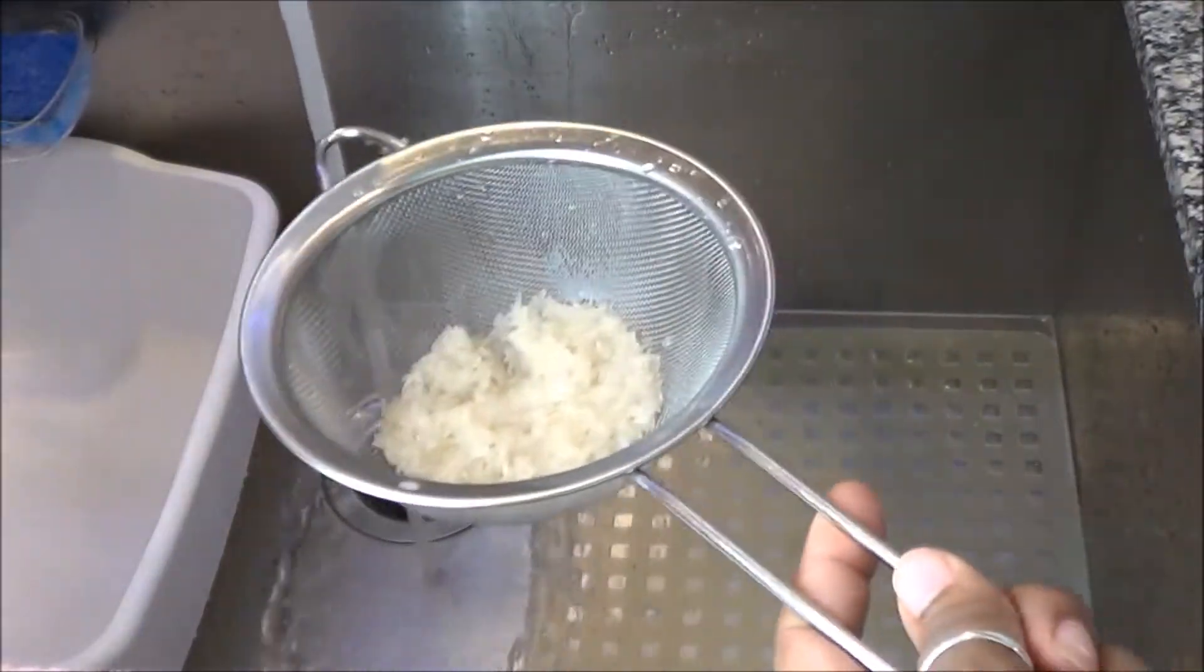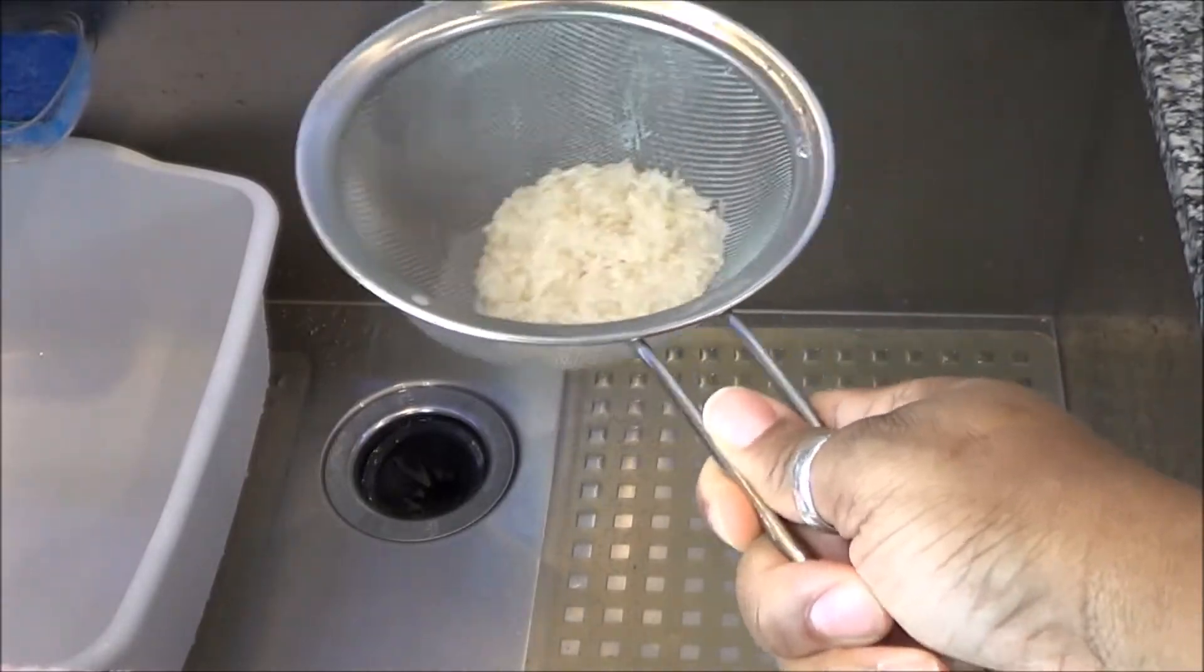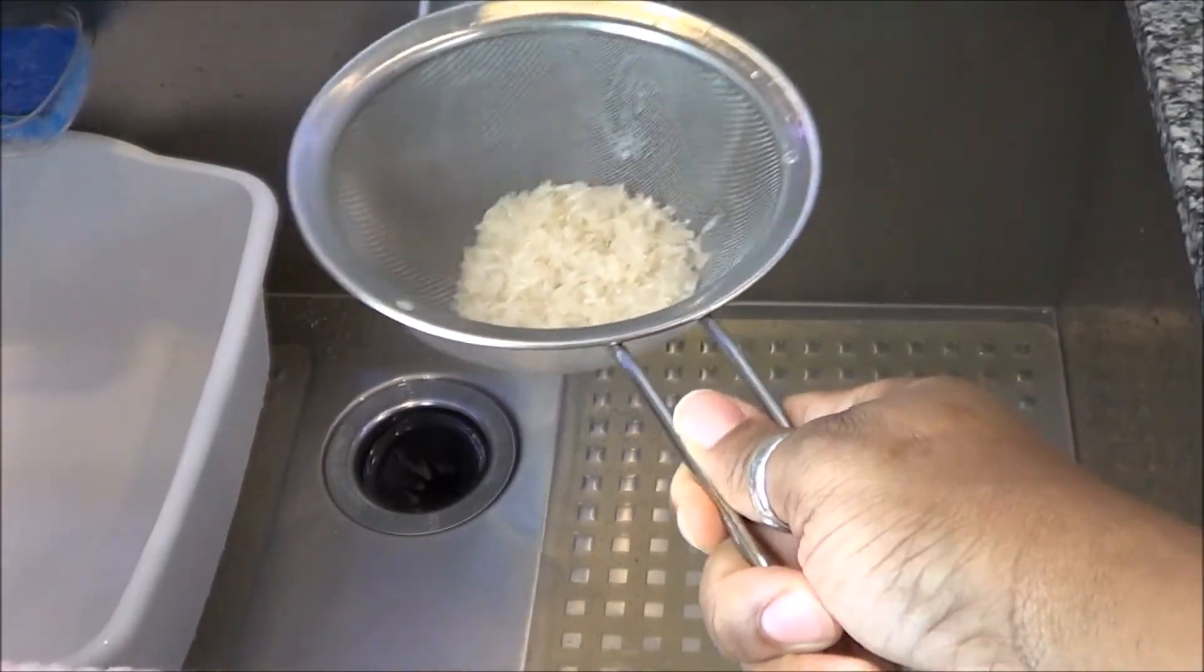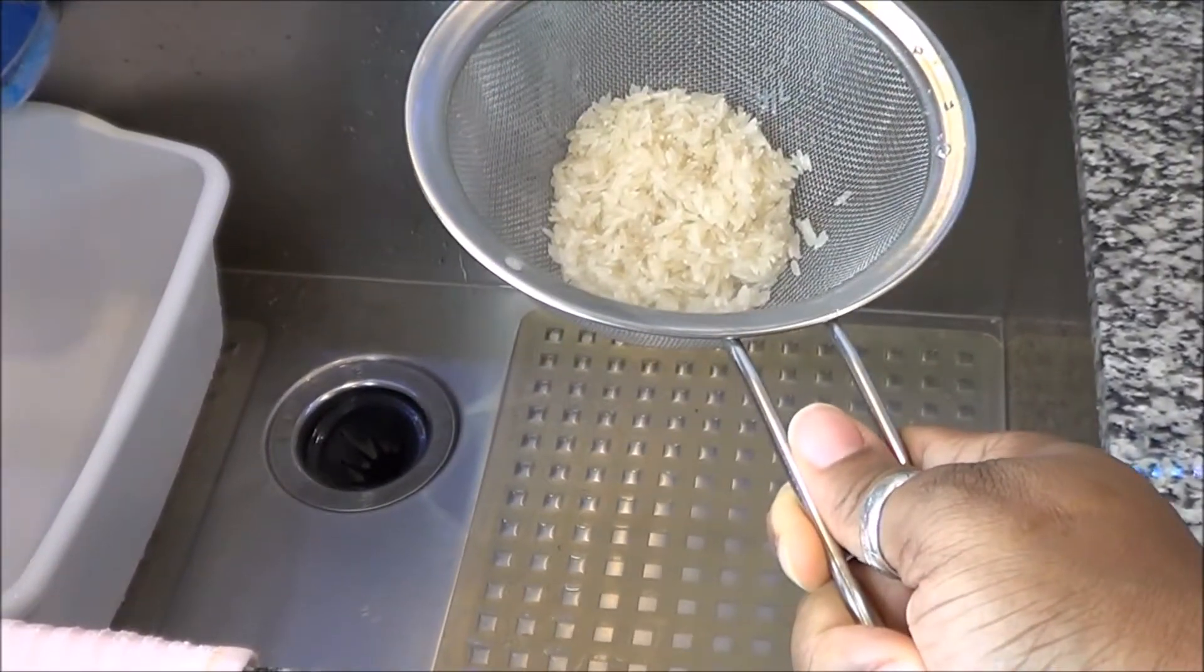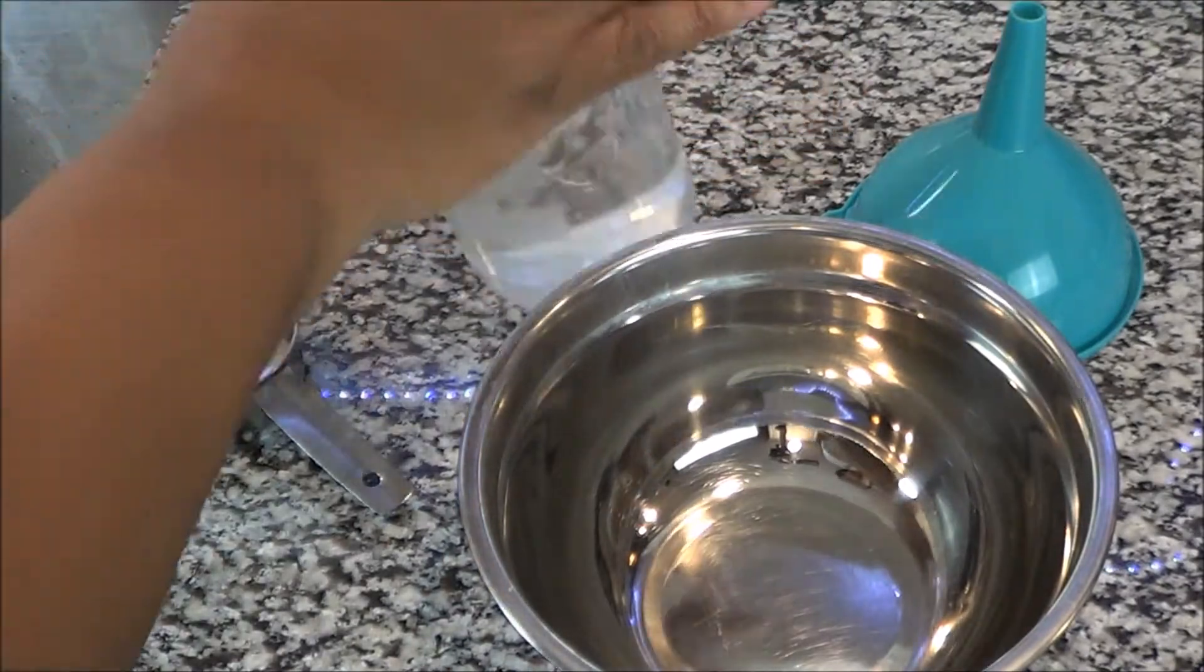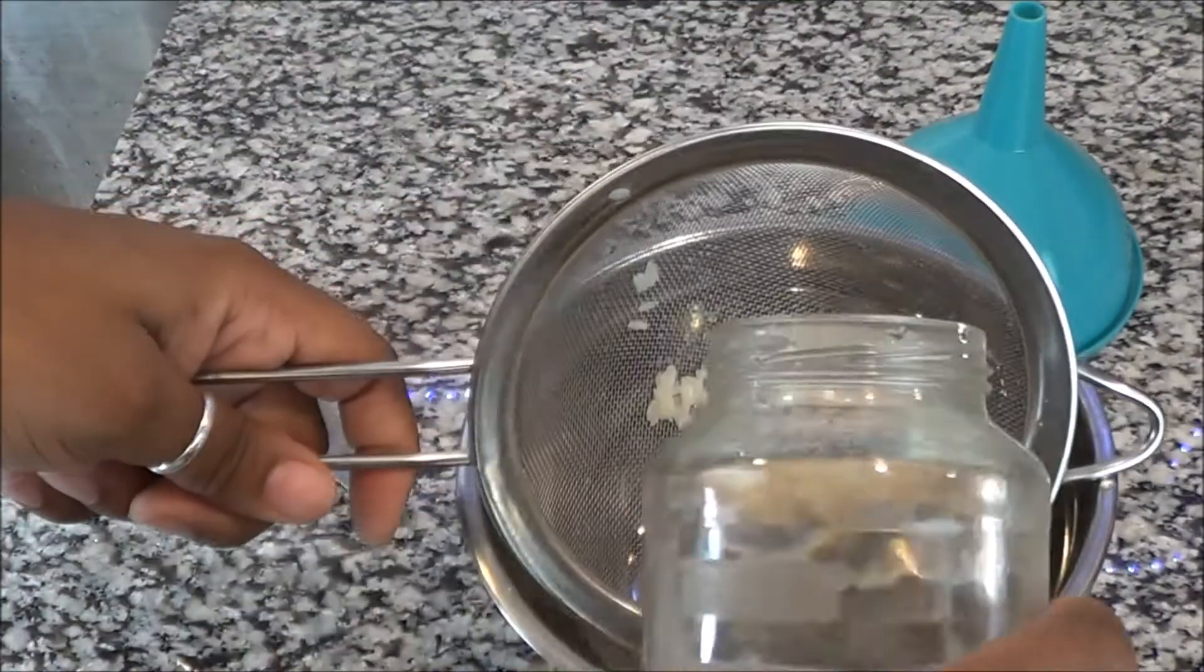Now here we have me just rinsing off the rice to get any impurities that were in the bag or any particles that might have been floating around off of the rice. Make sure it's cool water. Now we're going to take the filtered water and rinse this rice out of the colander.